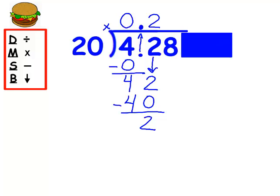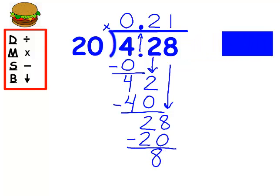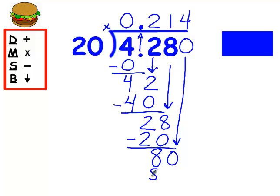Down comes my next number. How many groups of twenty can I get out of twenty-eight? I get one. One times twenty is twenty. I have eight left over. I can't have a remainder when I have a decimal point, so I have to add a zero and drop it down. How many groups of twenty out of eighty? I can get four groups. Four times twenty is eighty, and now I have nothing left over. Again, I have everything lined up.